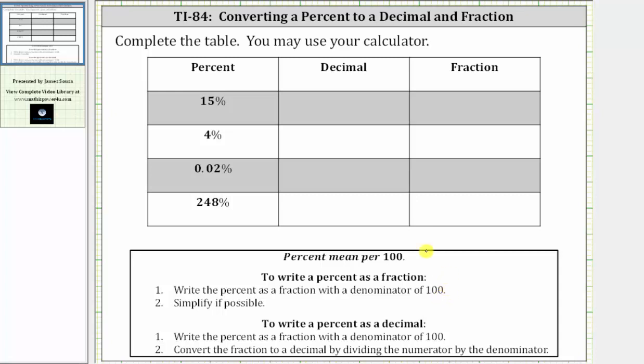For the first example, we have 15%, which means 15 per 100, and therefore the fraction is 15 over 100.